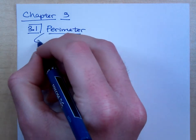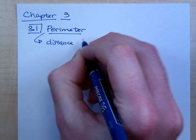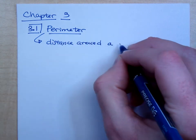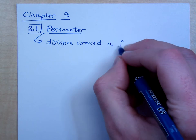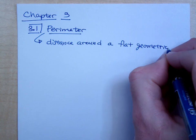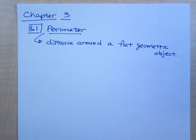And perimeter, in case you guys have forgotten, is the distance around, I guess a flat geometric object. You're just going to be measuring the distance around something. That's really all that there is.